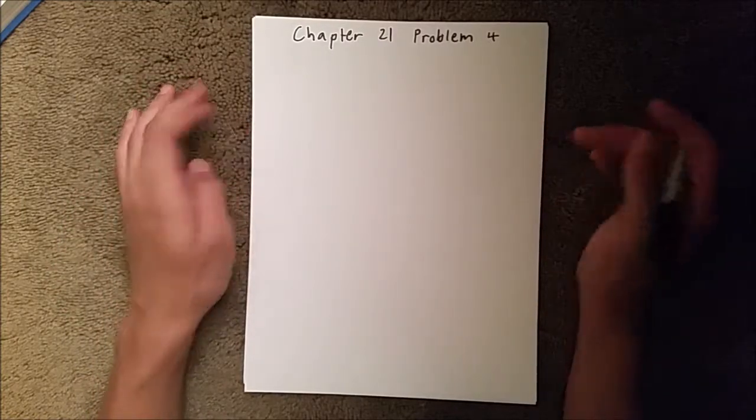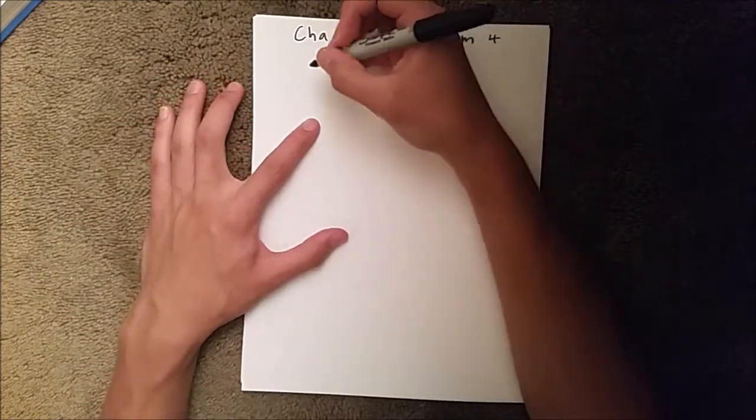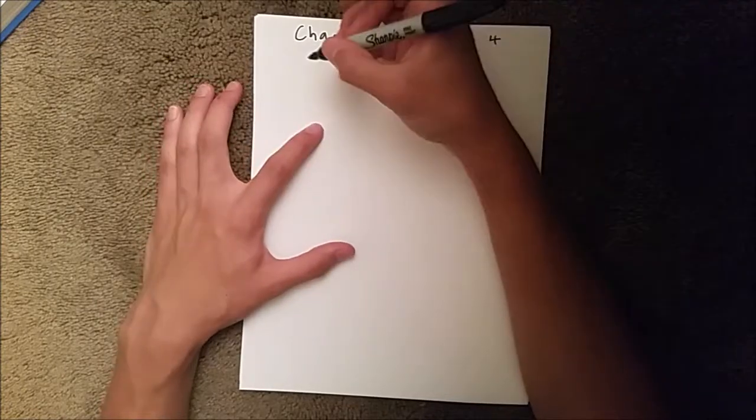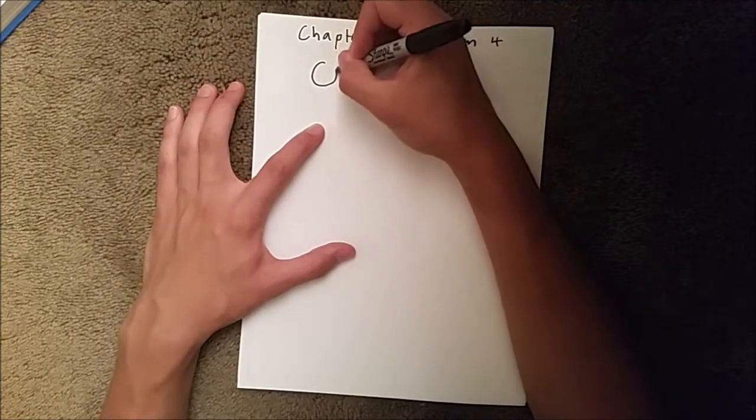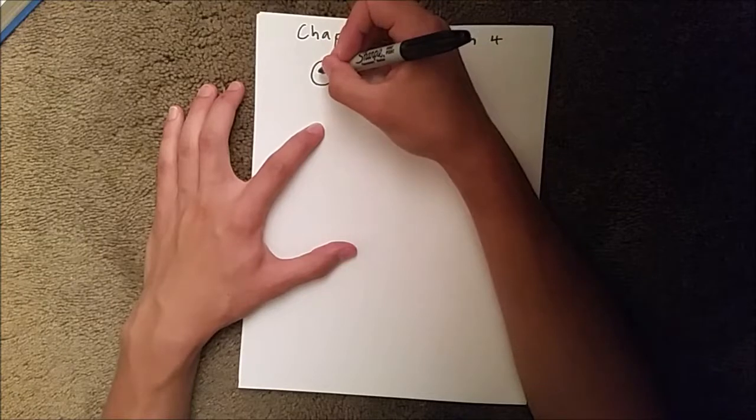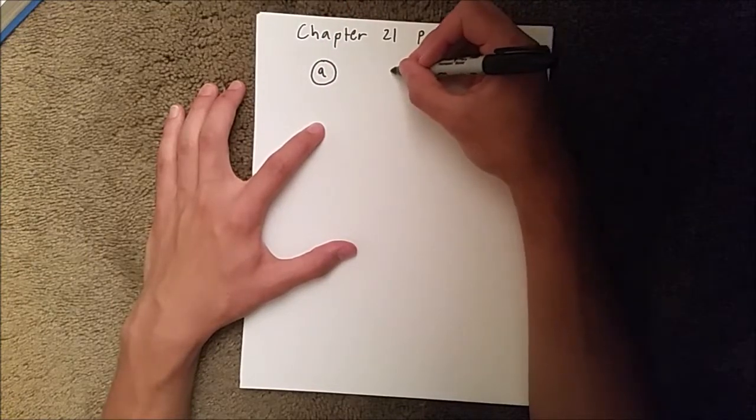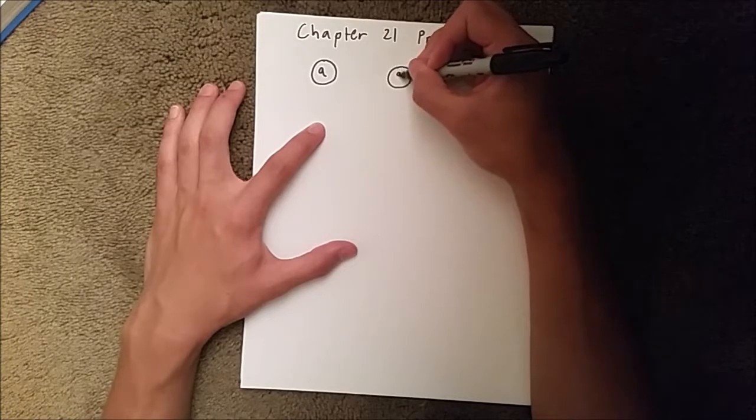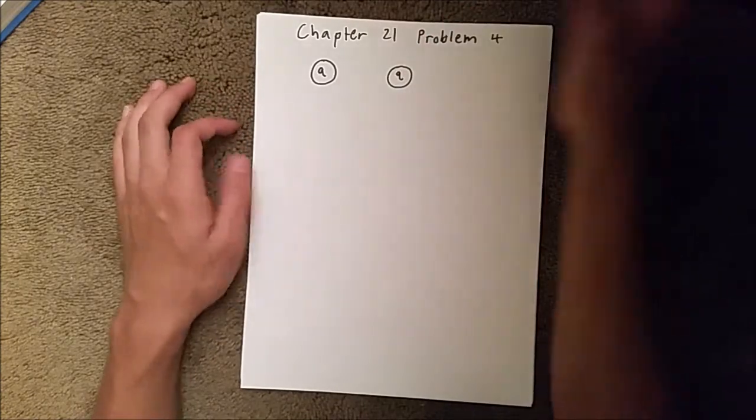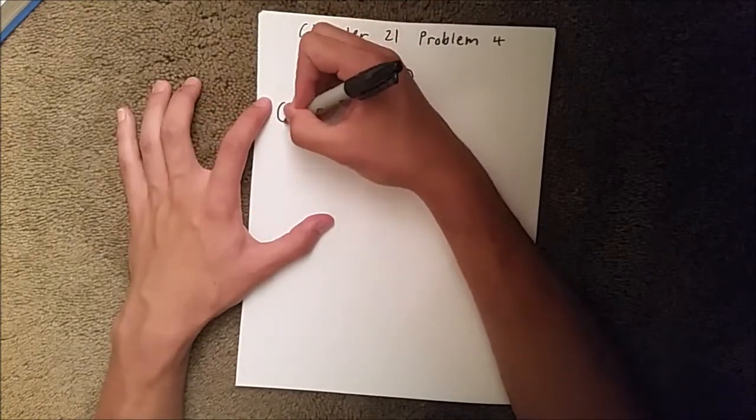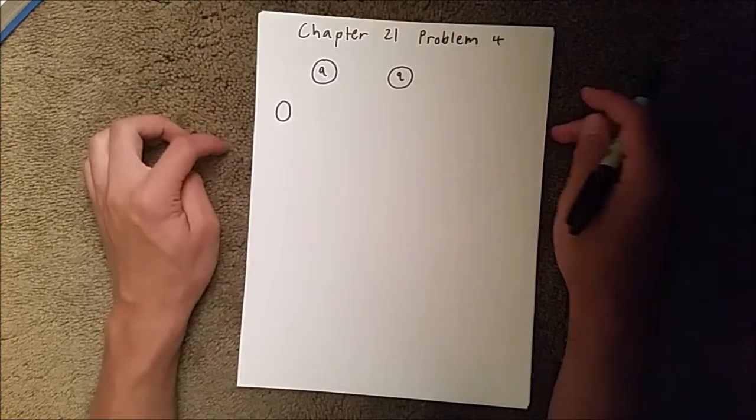We start out with this diagram where we have a charged sphere with charge Q, and then we have another identical sphere also charged Q over here, and then we have a third sphere down here that is neutral.